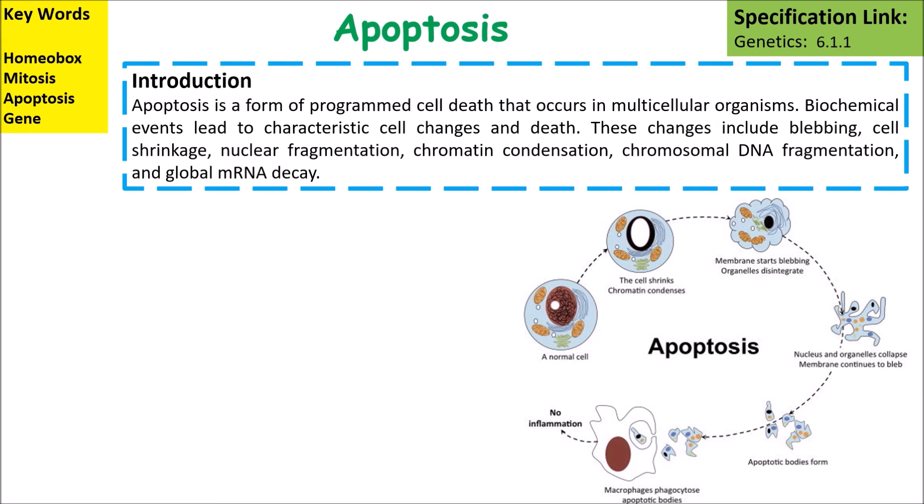Another way that the body can be structured is by apoptosis. Apoptosis is a form of programmed cell death that occurs in multicellular organisms. Biochemical events lead to characteristic cell changes and death. These changes include blebbing, cell shrinkage, nuclear fragmentation, chromatin condensation, and chromosomal DNA fragmentation.